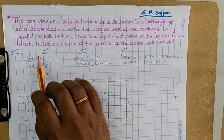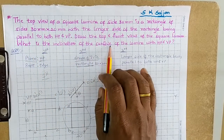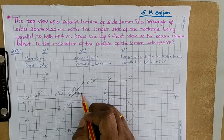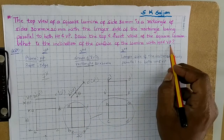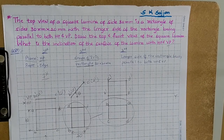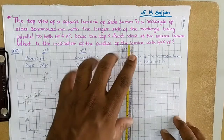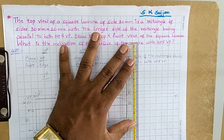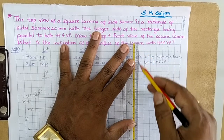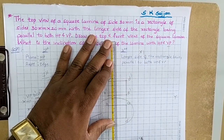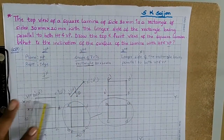Now we want to find what is the inclination of the surface of the lamina with HP — that is, how much theta is — and also with VP. To find the inclination, first we draw the side view. With the help of the side view, we can find out theta and phi. Draw one vertical line perpendicular to the X-Y line.